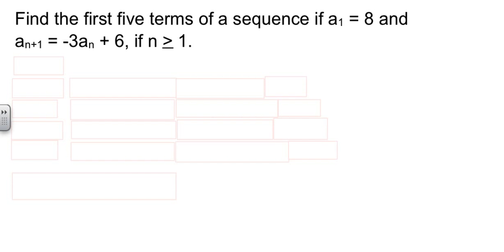So that's the difference between the two kinds of formulas. We're going to do one here, where we find the terms of a sequence based on a recursive formula. Well, the sequence is, starting at a₁ equals 8. Each term, the next term, is negative 3 times the previous, plus 6, assuming n is greater than or equal to 1.